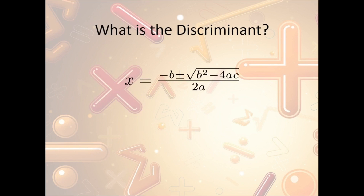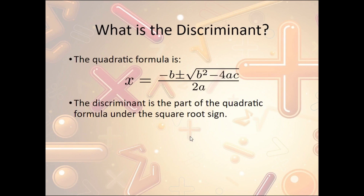Before we get started, what is the discriminant? The discriminant is the part under the square root. If the value under the square root is positive, then we have two roots. If the value under the square root symbol is negative, there are no roots. That's why we call it the discriminant — it discriminates against negative roots. So if it ends up negative, we know there is no solution.